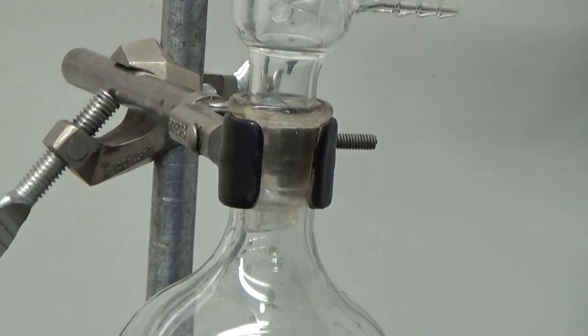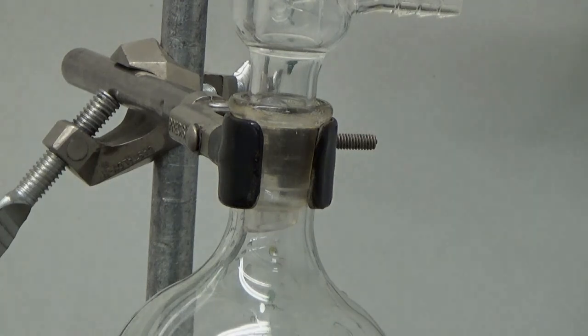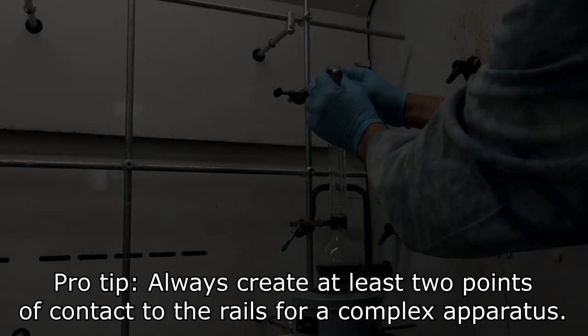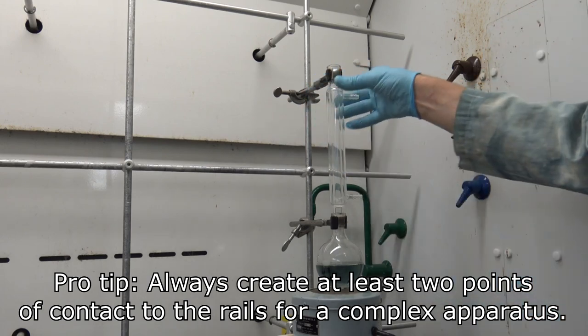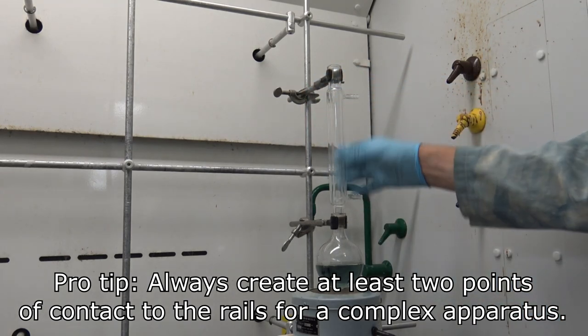At this point, if you choose, you can use your blue keck clip to clip this joint to further secure it, but we're going to use a clamp on the condenser instead. Finally, I'll clamp that Liebig condenser in place to be sure that my apparatus is stable.